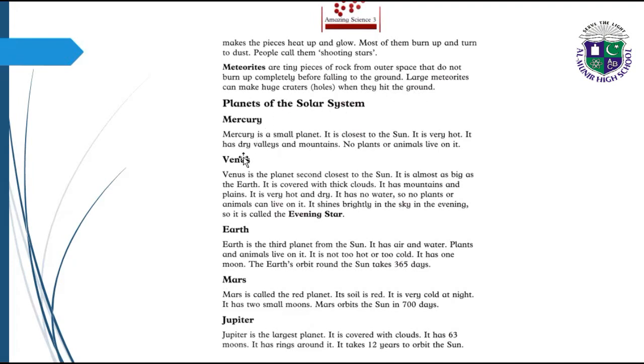Planets of the solar system: Mercury is a small planet. It is closest to the Sun. It is very hot. It has dry valleys and mountains. No plants and animals live on it. Venus is the planet second closest to the Sun. It is almost as big as the Earth. It is covered with thick clouds. It has mountains and plains. It is very hot and dry. It has no water, so no plants or animals can live on it. It shines brightly in the sky in the evening, so it is called evening star. Earth is the third planet from the Sun. It has air and water. Plants and animals live on it. It is not too hot, not too cold. It has one moon. The Earth's orbit around the Sun takes 365 days.